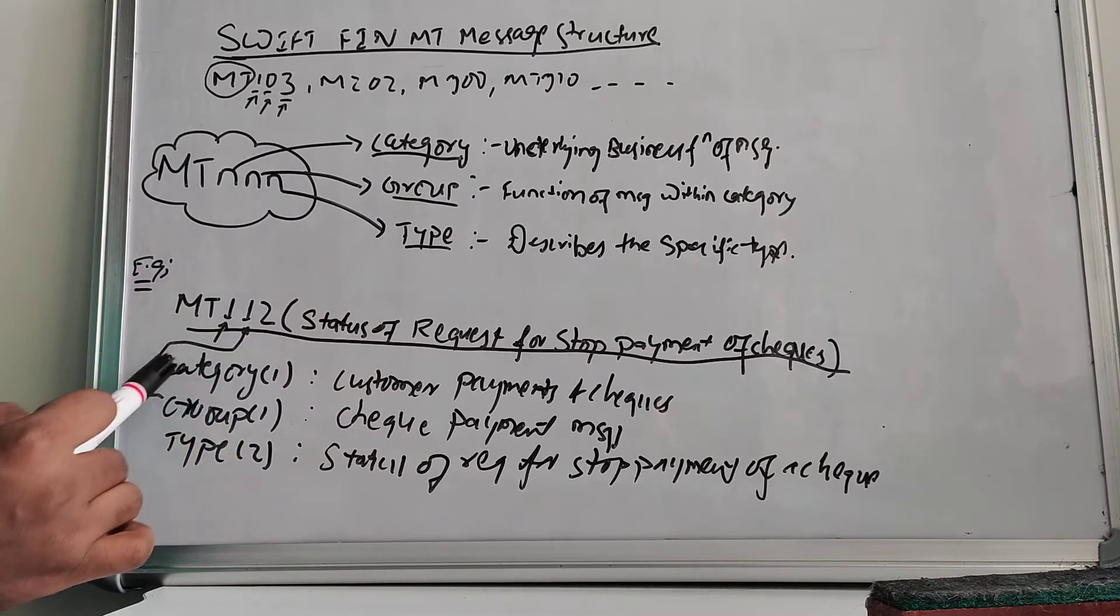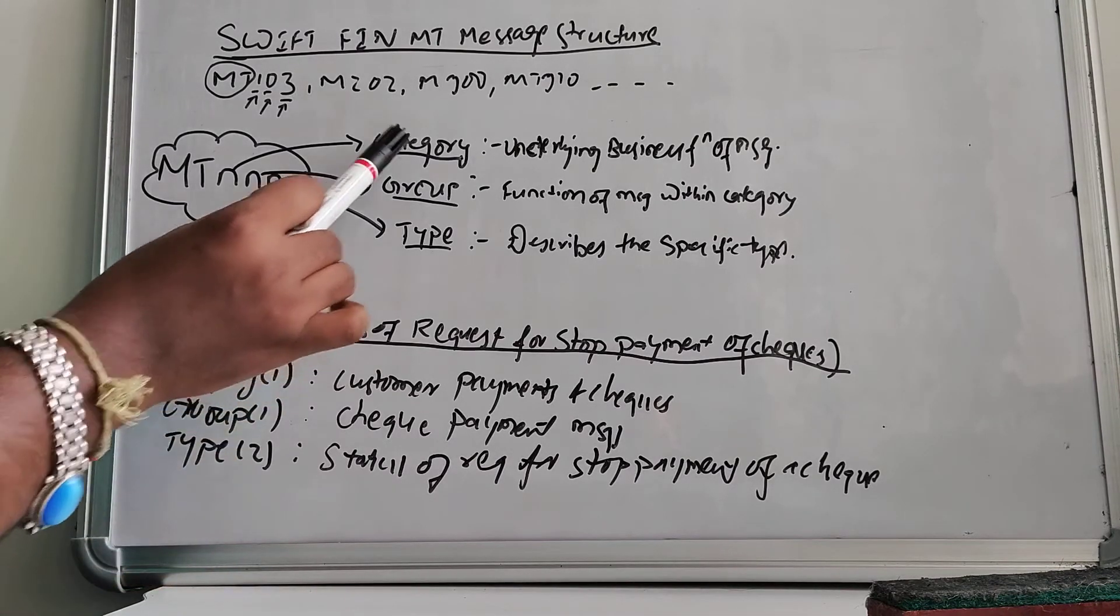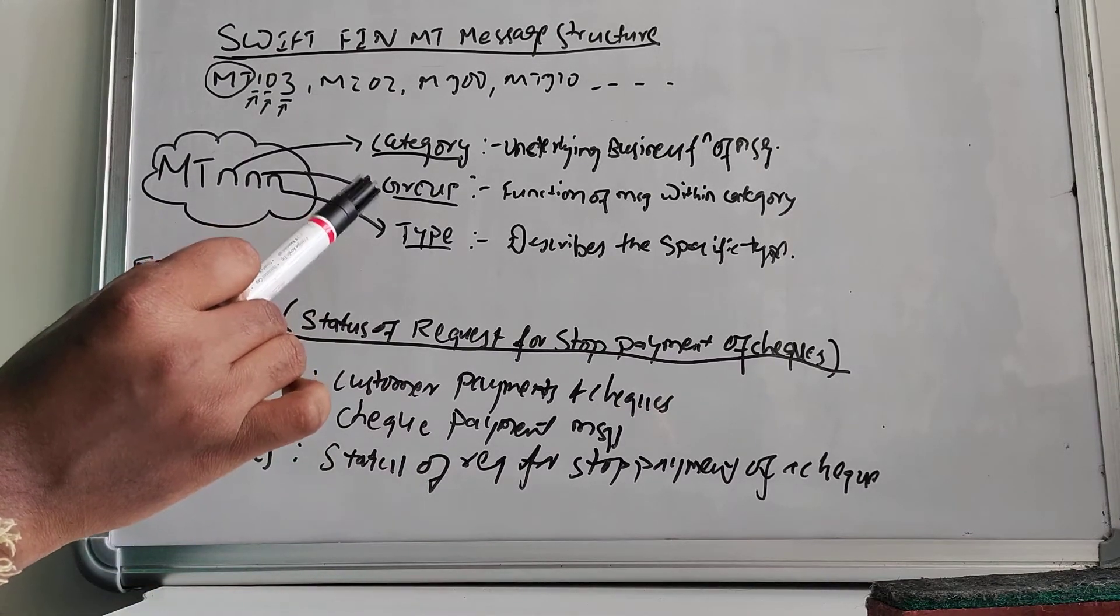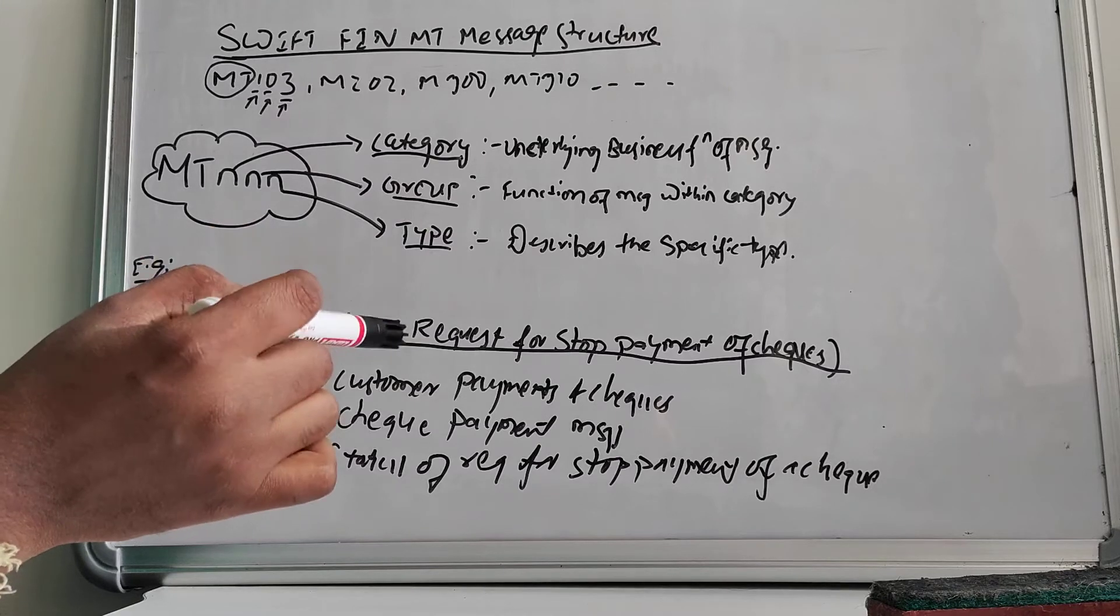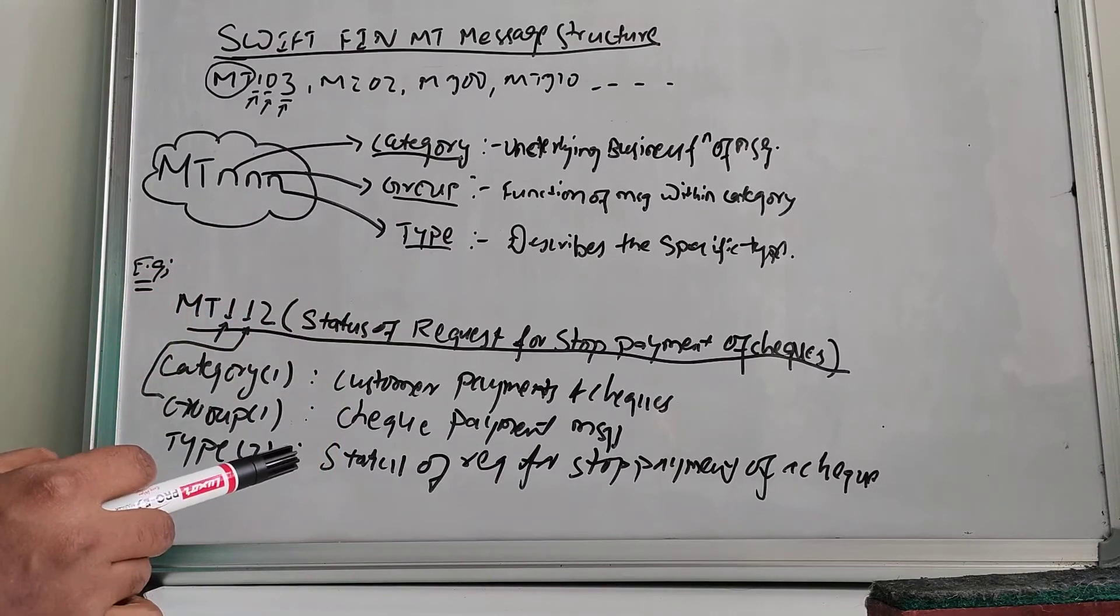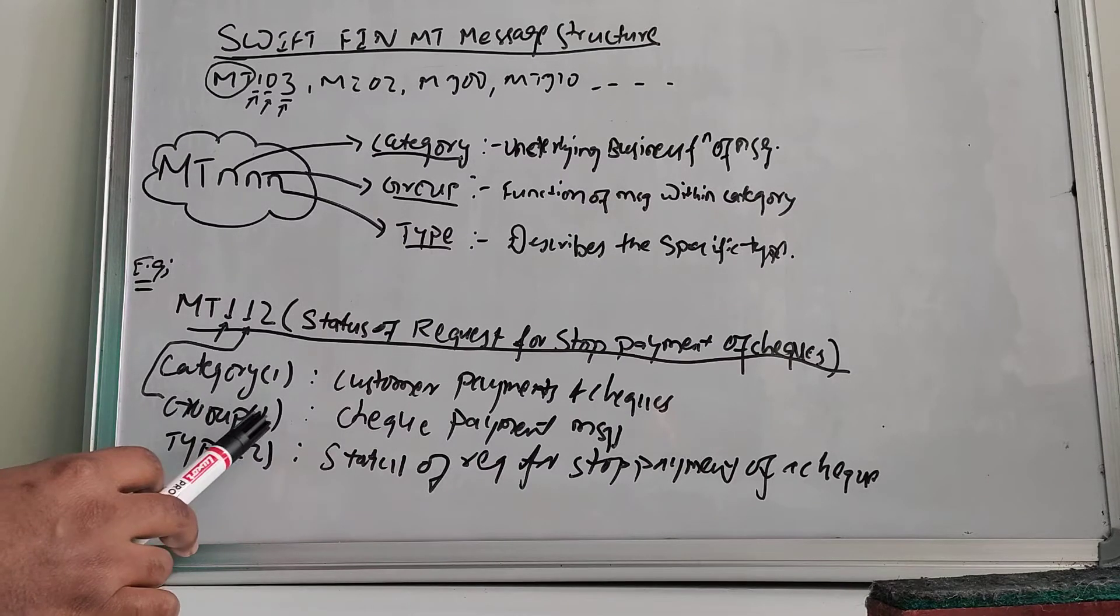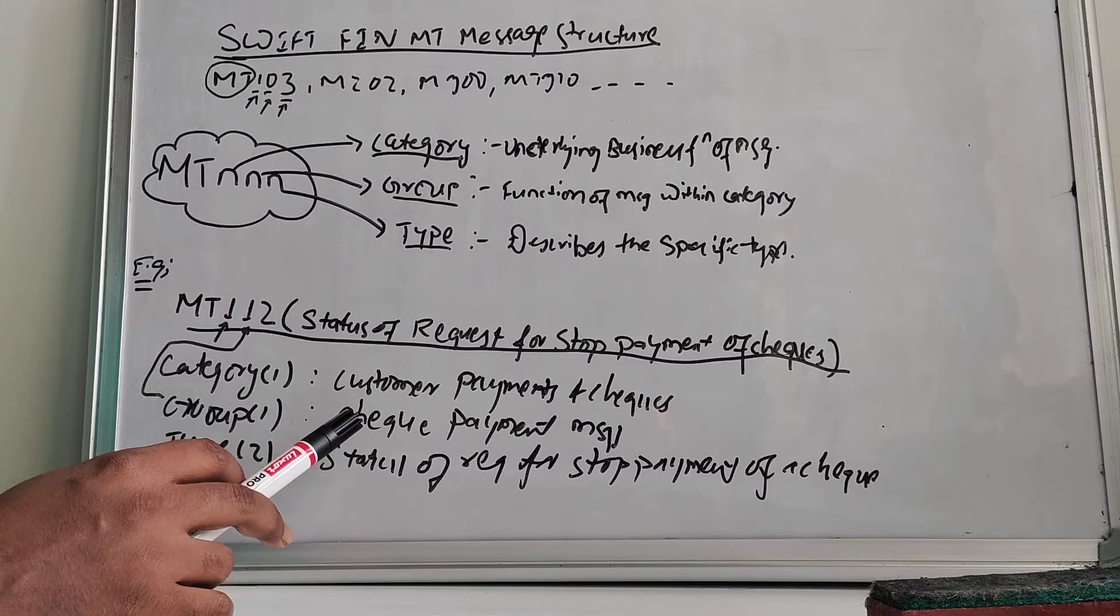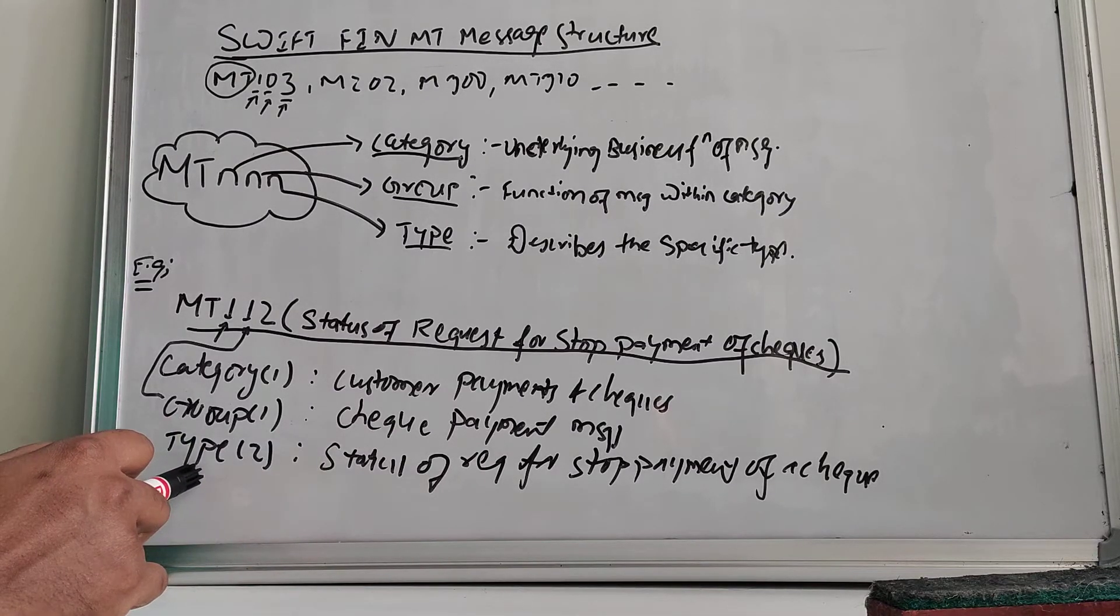The first one is the category. As I've already mentioned, category is 1. Category 1 means customer payment. We've already gone through videos about MT different series. The second is group. Group is 1 again, and that means check payment messages.